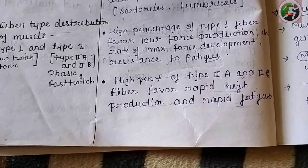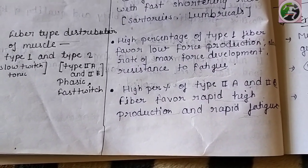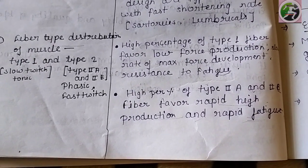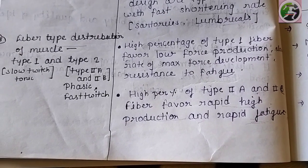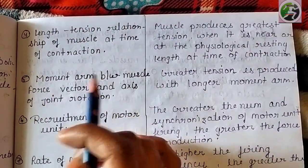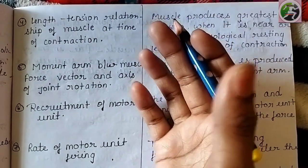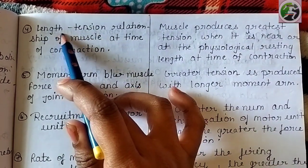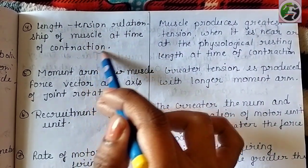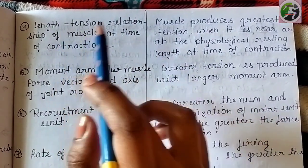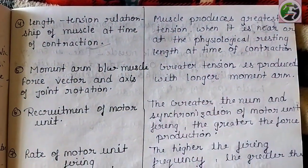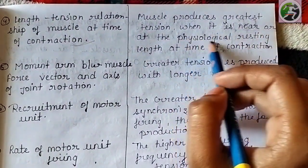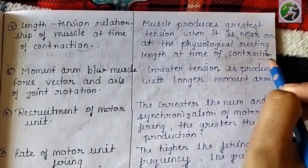Tension generation depends on the muscle fiber type — Type 1 and Type 2b perform differently. The next factor is the length-tension relationship: muscle produces the greatest tension when it is near its physiological resting length at the time of contraction. The length-tension relationship at the time of contraction is a key factor in muscle force production.